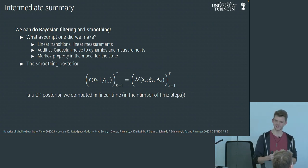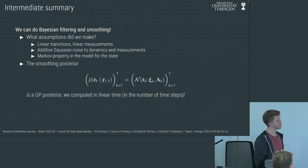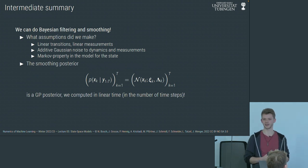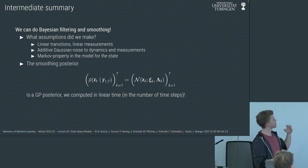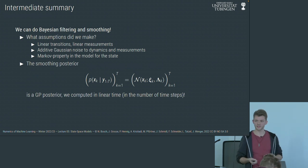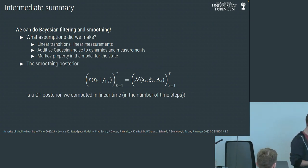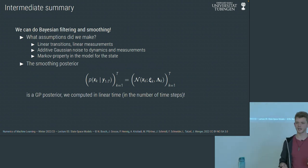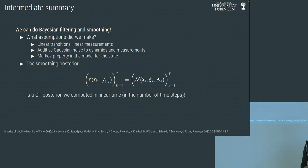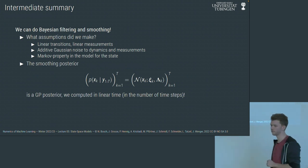The smoothing posterior, this collection of smoothed Gaussian random variables, are the marginals of a Gaussian process posterior computed in linear time. This connects to stochastic differential equations. The assumptions were: linear transitions, linear measurements, additive Gaussian noise, and the Markov property. Note: not every Gaussian process posterior can be computed using Gaussian filtering and smoothing — only every smoothing posterior is a Gaussian process posterior, not the other direction.